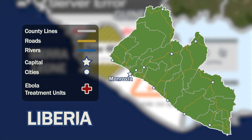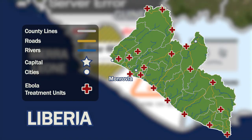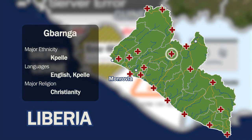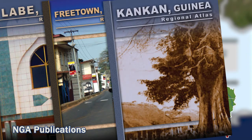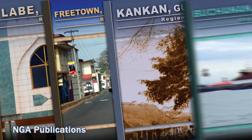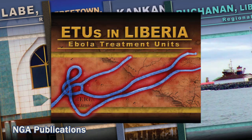So human geographers from NGA got to work standardizing names, improving accuracy, and adding features to the geographic names database. Something as simple as a name can tell a skilled human geographer the language, ethnicity, and even religion of a village. And including details about population centers, medical capabilities, and cultural practices enabled NGA to assist aid workers in combating the spread of the disease.